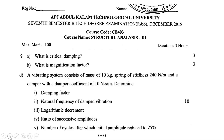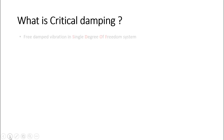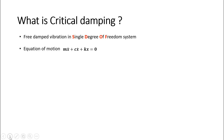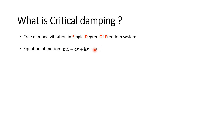Let us see critical damping. Critical damping is a condition in free damped vibration in a single degree of freedom system, also known as SDOF system. The equation of motion for a single degree of freedom system for free damped vibration is m·x̄̈ + c·ẋ + kx = 0. This zero indicates there is no external force acting on the system. Each term indicates a damper, stiffness, and inertia force respectively.